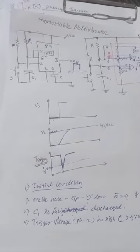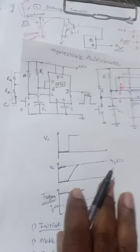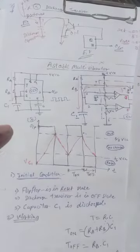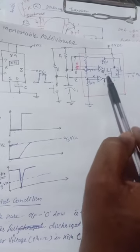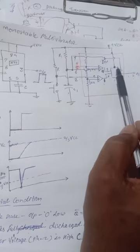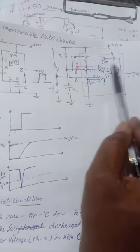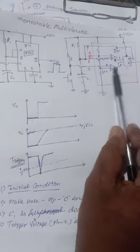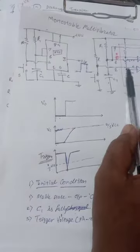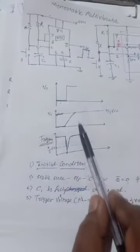Good morning. Today we are going to see another application of IC 555, that is the monostable multivibrator. Last time we saw the astable multivibrator. Now we are going to see the monostable multivibrator. This is the monostable multivibrator with internal block diagram, drawn here. The purpose is to understand the working — how it works internally. In the exam, you just have to draw this diagram; this is not compulsory, but this compulsory diagram you should know.